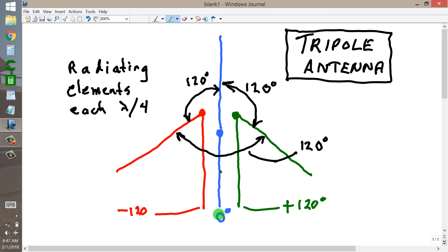So say the blue wire and radiating element are at zero degrees phase. We just assign a number. The red one minus 120 degrees and the green one plus 120 degrees.